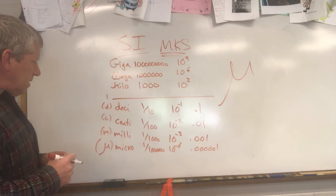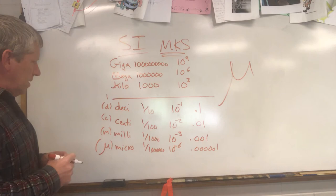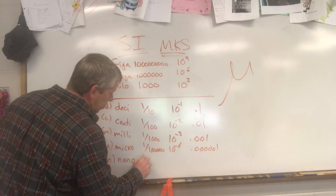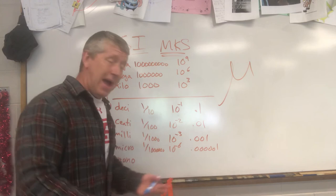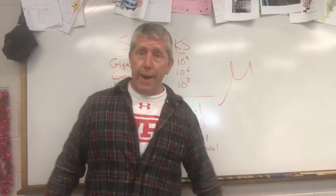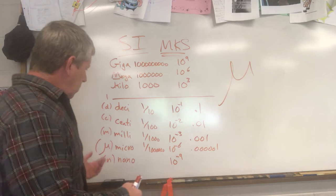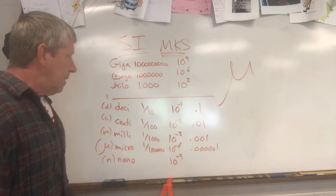One more: nano — little n. Nano means one one-billionth — ten to the negative ninth. And there's also pico — ten to the negative twelfth, abbreviated little p — you might use pico in chemistry. Pico is your next one down after nano.